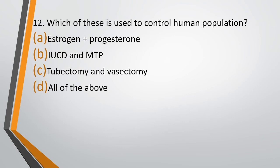Question 12. Which of the following is used to control human population? Option A: Estrogen plus progesterone. Option B: IUCD and MTP. Option C: Tubectomy and vasectomy. Option D: All of the above. The correct answer is Option D — all of the above.